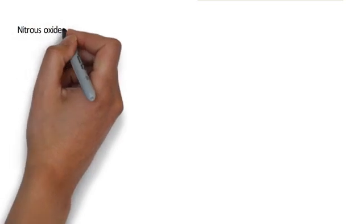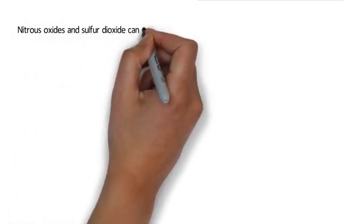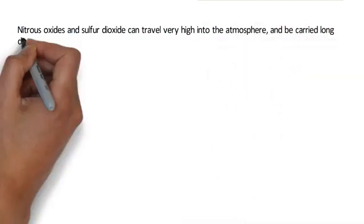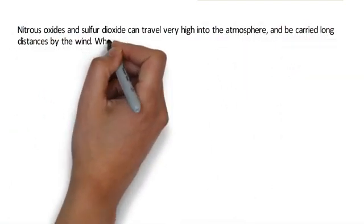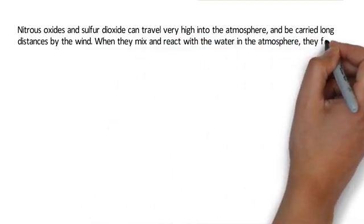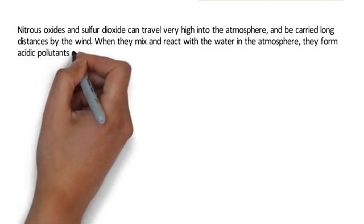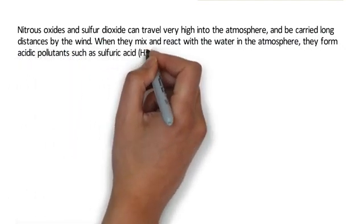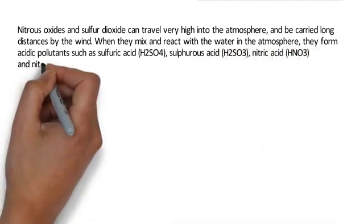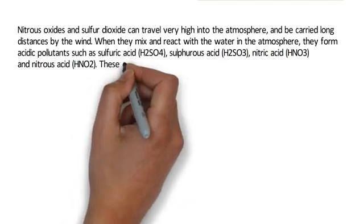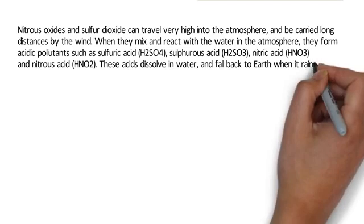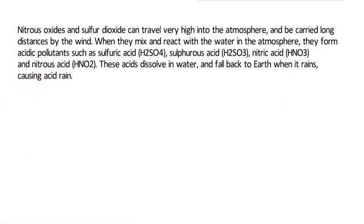Nitrous oxides and sulfur dioxide can travel very high into the atmosphere and be carried long distances by the wind. When they mix and react with water in the atmosphere, they form acidic pollutants such as sulfuric acid (H2SO4), sulfurous acid (H2SO3), nitric acid (HNO3), and nitrous acid (HNO2). These acids dissolve in water and fall back to earth when it rains, causing acid rain.